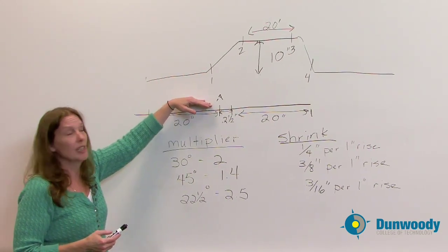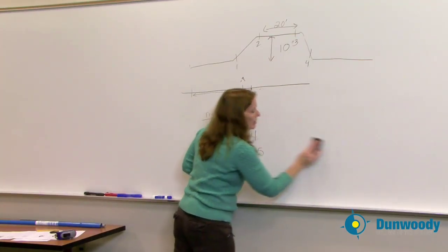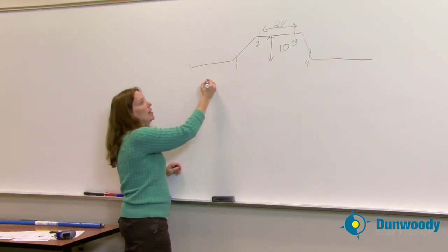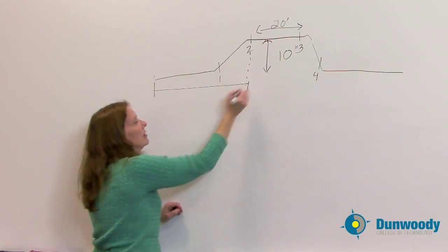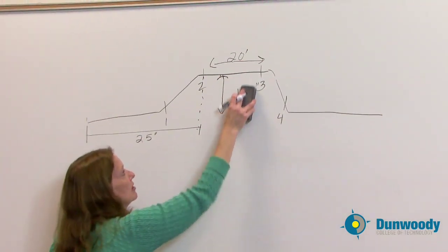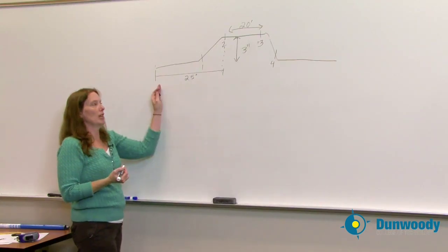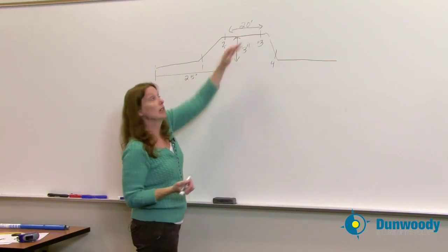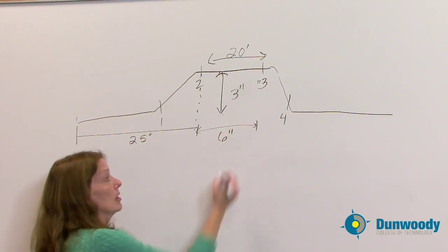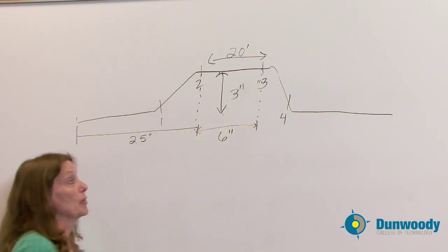So how do we begin a four-bend saddle? It's basically two back-to-back offsets. Let's look at a problem: I have an obstruction, and from this side to this point is 25 inches. The obstruction is three inches tall and six inches in length. I want to bend that conduit around that three-by-six-inch obstruction.